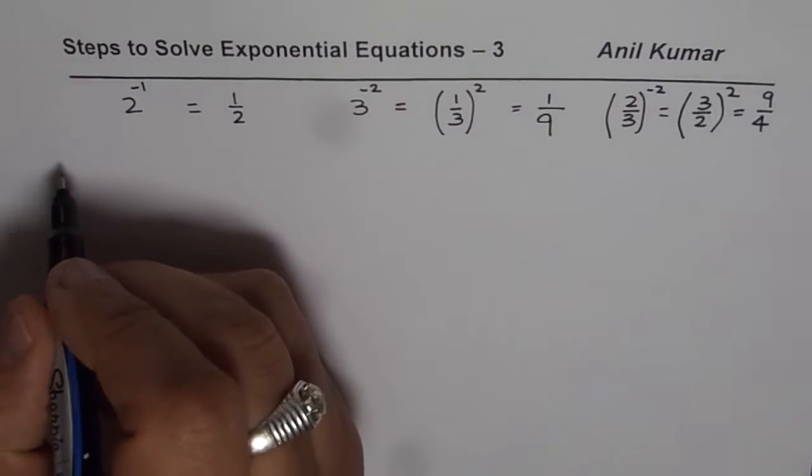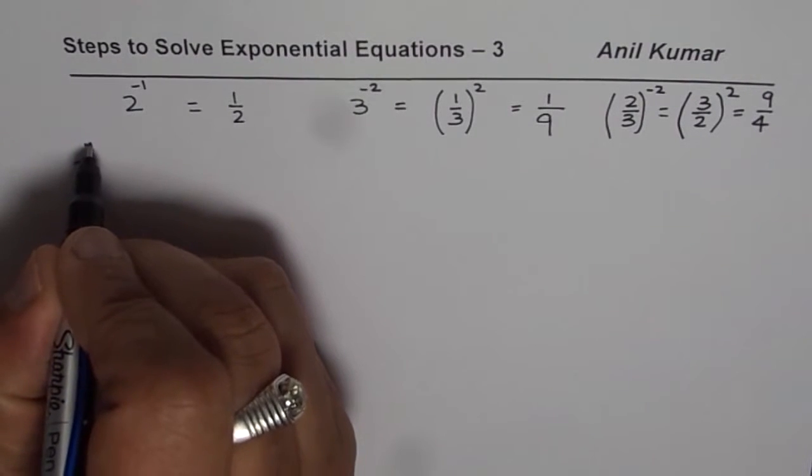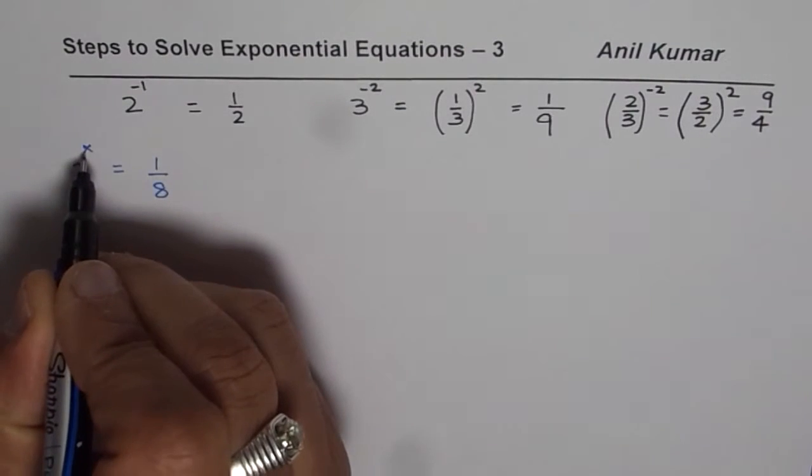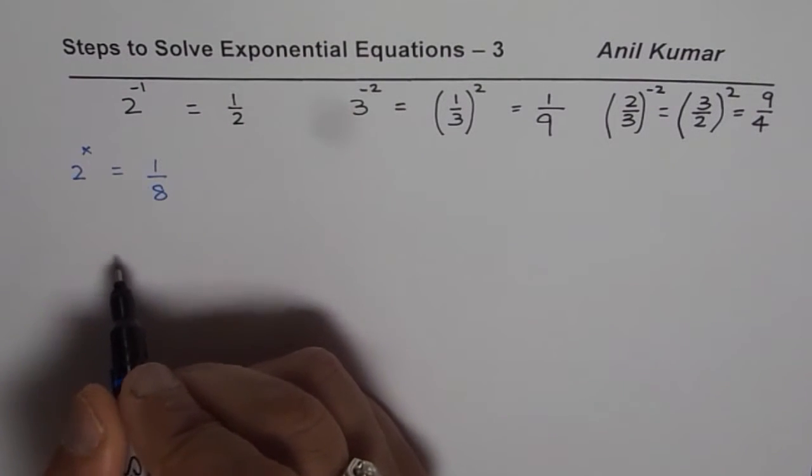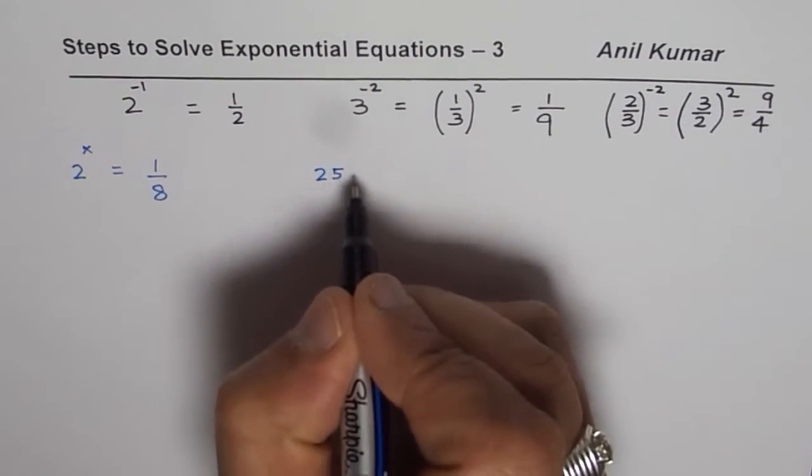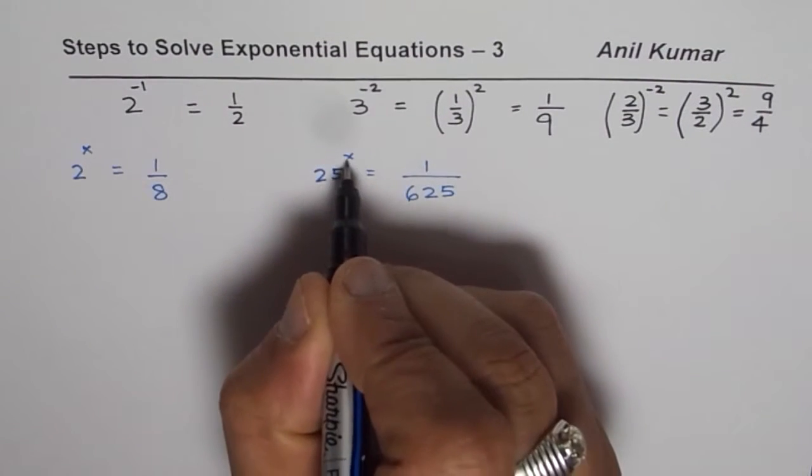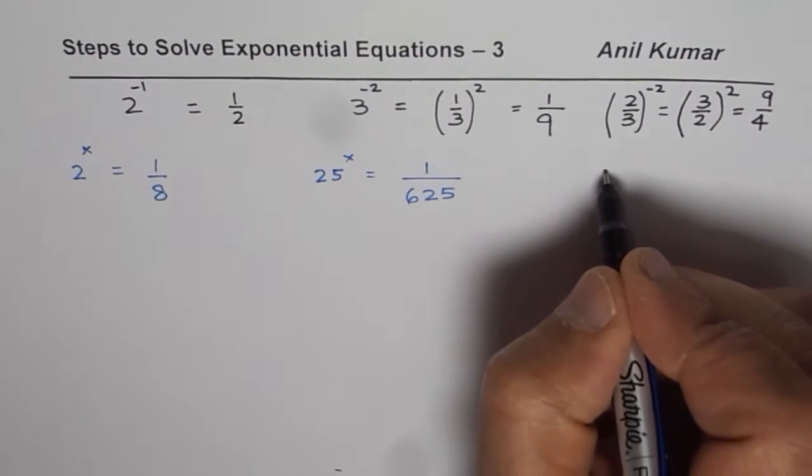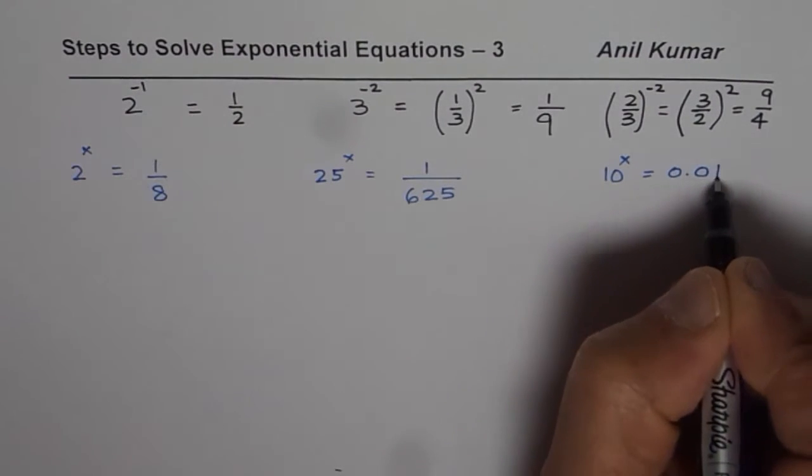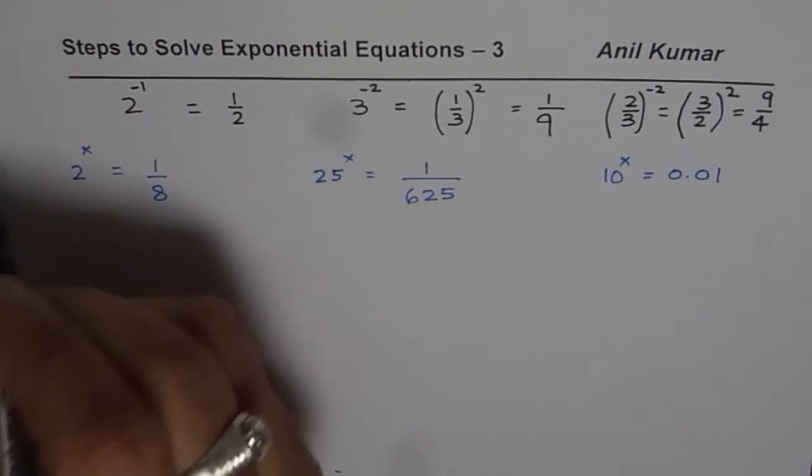Let us say, if I have 2 to the power of x is equal to, let us say, 1 over 8. We need to find x. That is what solving equation will mean. Let me write another question for you. 25 to the power of x equals to 1 over 625. You need to find x. Let us say we have 10 to the power of x equals to 0.01. Now let us see how to solve these three equations one by one.